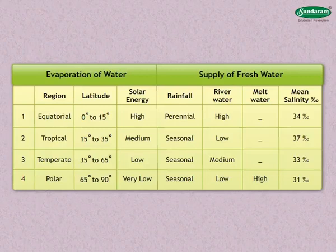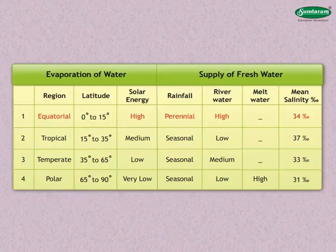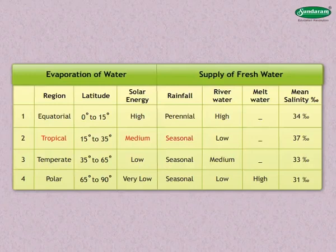In the equatorial region, the solar energy received is high, the rainfall is perennial, the supply of fresh water by rivers is high, and the mean salinity is 34 per thousand. In the tropical region, the solar energy received is medium, the rainfall is seasonal, and the supply of fresh water by rivers is low.